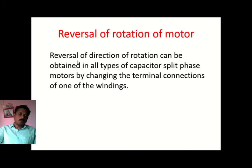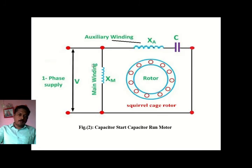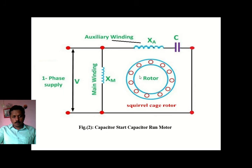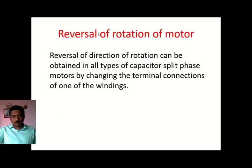Reversal of rotation of this motor can be obtained by interchanging the terminals of any one winding — either the main winding or the auxiliary winding. If we interchange the terminals of one winding, the motor will rotate in exactly the opposite direction: if it was running clockwise, after interchanging it will run anti-clockwise.